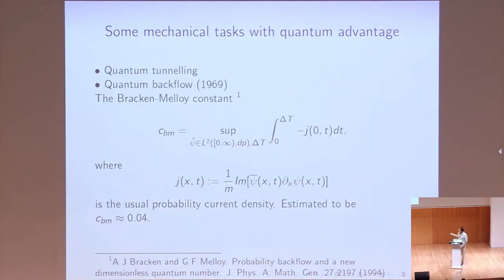So this was isolated by Bracken and Melloy in this paper in 1994, and they defined this constant, which gives a numerical estimate of how big this effect is. So the quantity of interest here is the integrated probability flow at the origin, and we want it to be to the left, so there's a minus sign to account for that. And we take the supremum of this quantity over all possible integration times, or over all particles with a positive momentum distribution.